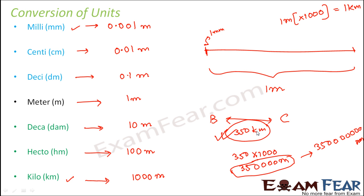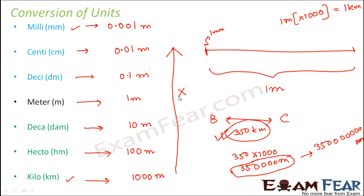The most convenient way to represent a bigger distance is by using bigger units. Similarly, when we represent smaller distances, we use smaller units like millimeters and centimeters. Now, a lot of times you might need to convert from one unit to another. Always remember: when you have to convert from a unit at the bottom towards the top — for example, kilometers to decameter, or kilometer to meter, or decameter to decimeter — you are going to multiply.